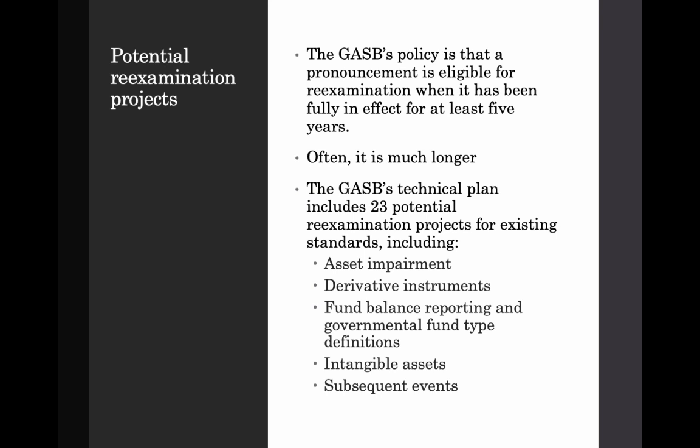The GASB's policy is that once a pronouncement has been fully effective for at least five years, it's eligible to be re-examined. Often it takes much longer than that. For instance, the deferred compensation plan project that the board added in December of 2018 relates to Statement 32, which was effective in fiscal years 1998 and 1999 — so almost 20 years ago.